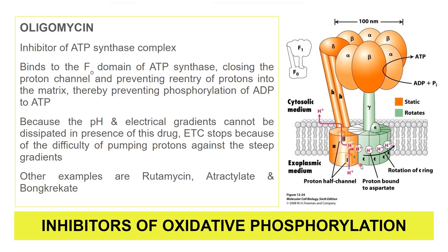If the proton channel is closed, H+ ions cannot enter the matrix, the ATP synthase will not spin, and there will be no conversion of ADP to ATP. Although all electrons have been transferred and protons pumped, oligomycin blocks reentry of protons, halting ATP synthesis. As a result, the proton motive force and electrical gradient are dissipated and the ETC stops. Other examples in this category include rutamycin, but the major one is oligomycin.